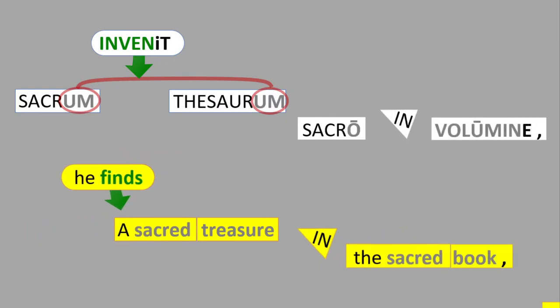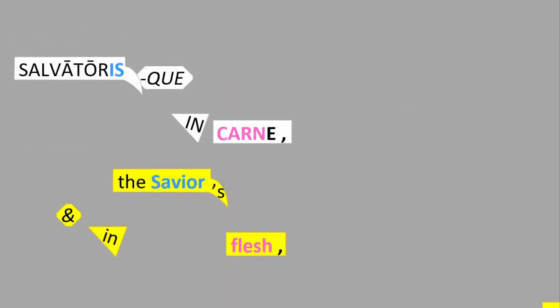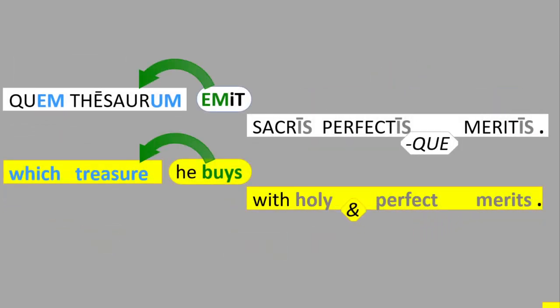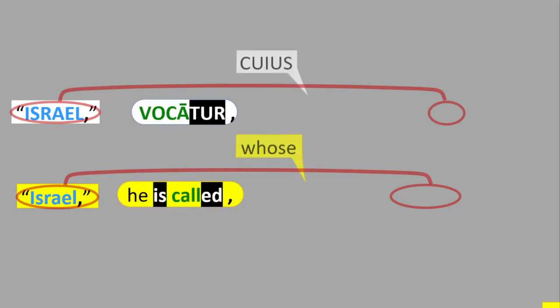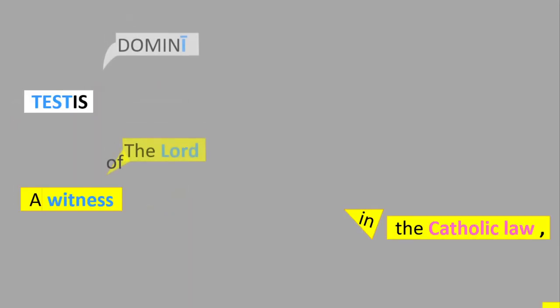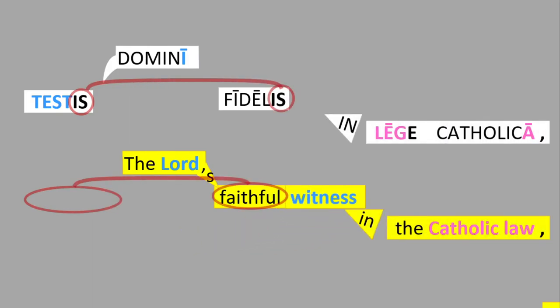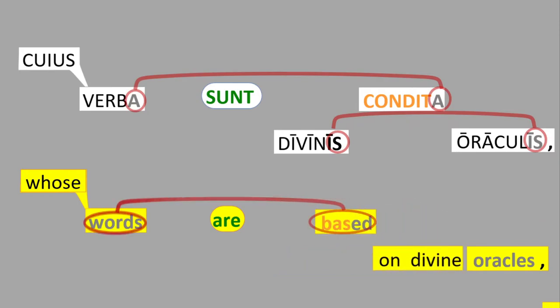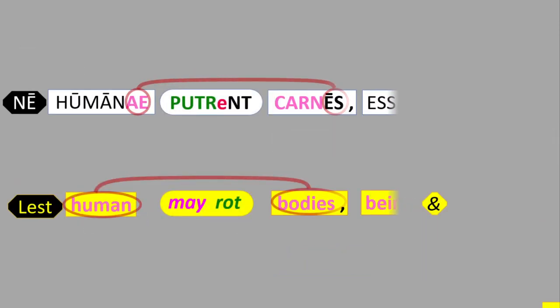sacrum invenit tesaurum, sacro inuo lumine, salvatoris qua in carne deitatem praevidit, quem tesaurum emit sacris perfictiis qua meritis, israel o cater cuius anima videns deum, testis domini fidelis in legge catolica, cuius verba sunt divinis o conditor raculis